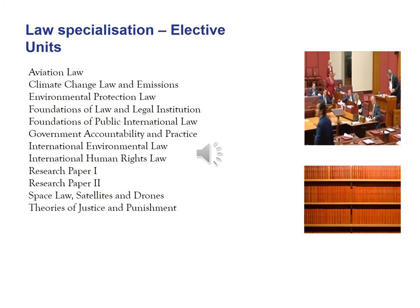Law elective options include aviation law, climate change law and emissions, environmental protection law, foundations of law and legal institutions — particularly helpful for those without a law background — foundations of public international law, government accountability and practice, international environmental law, international human rights law, research papers one and two, space law satellites and drones, and theories of justice and punishment, which relates to criminal law and criminology.